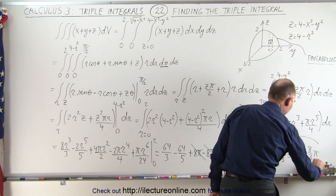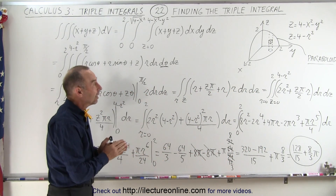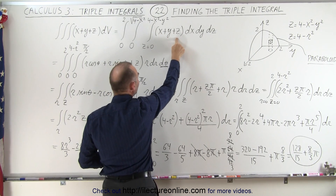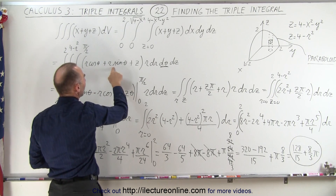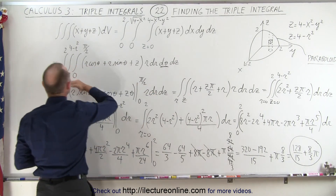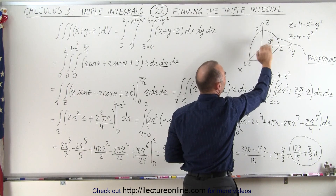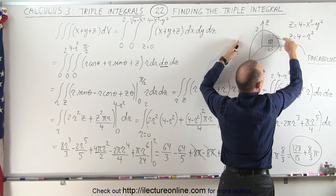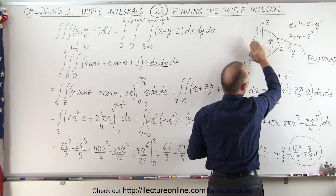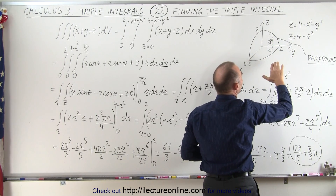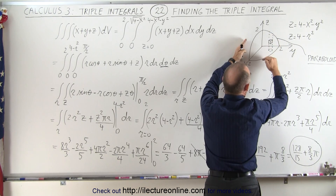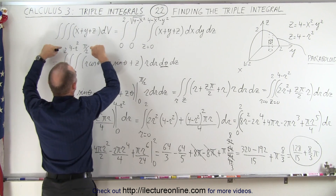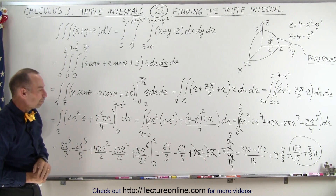The final result is 128 over 15 plus 8 pi over 3. This is not a volume per se — we were integrating the function x plus y plus z, converted to cylindrical coordinates as r cosine theta plus r sine theta plus z, multiplied times the volume element over the region bounded by the paraboloid z equals 4 minus x squared minus y squared. In cylindrical coordinates that's 4 minus r squared, integrated over the first quadrant above the xy plane. That's how it's done.